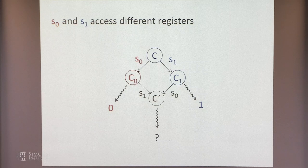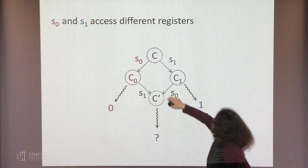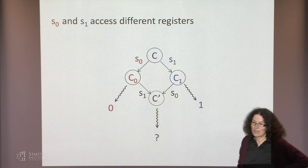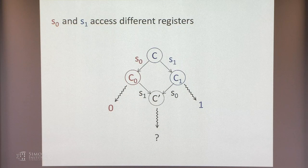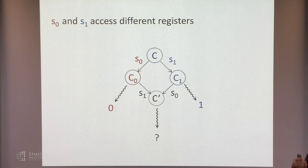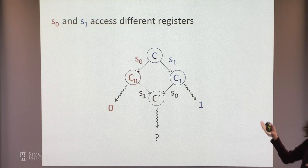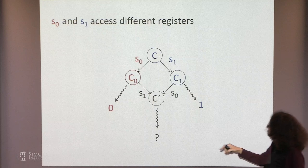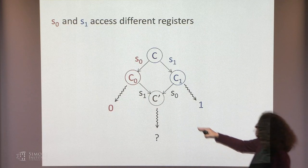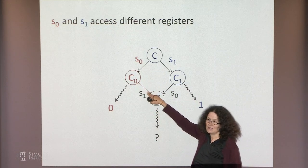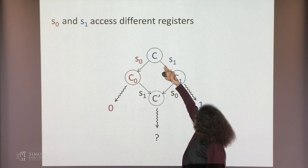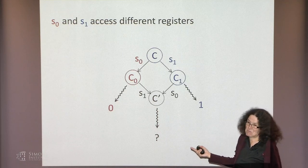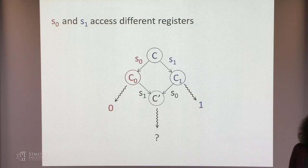Case 1: suppose steps s0 and s1 access different registers. Whether we do s0 then s1, or s1 then s0, the results are exactly the same — we end up in exactly the same configuration, because P0 and P1 are working on different registers and don't interfere. So an execution coming one way has to decide 0, and coming the other way has to decide 1, but the processes can't distinguish between these two configurations — a contradiction.